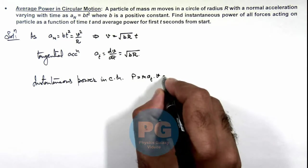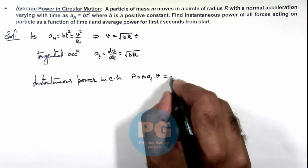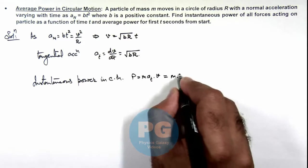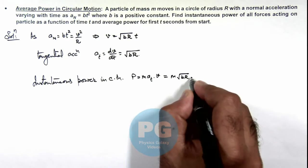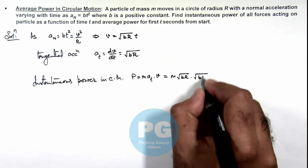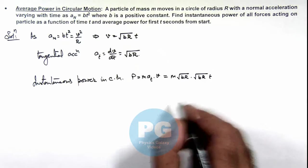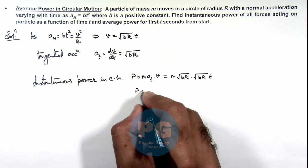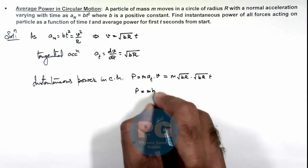So here, this is given as m·ay_tangential we can write as root bR, and the speed we have seen, this is given as root bRt. So instantaneous power we can write as m·b·R·t.